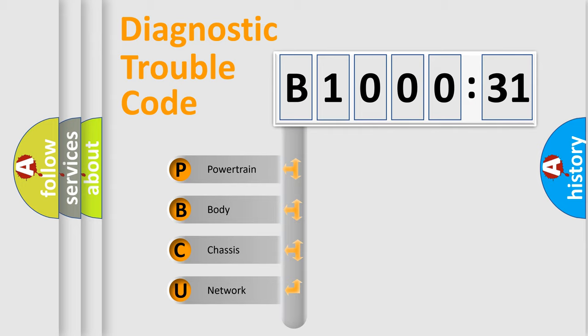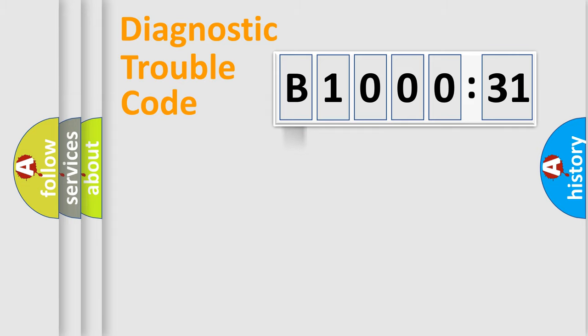We divide the electric system of automobile into four basic units: Powertrain, Body, Chassis, and Network.